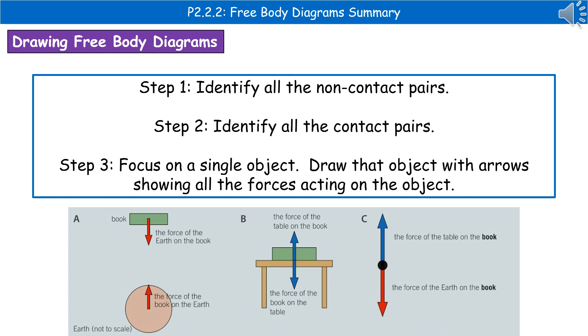We've got that bit first of all. And then we draw the arrows that represent the forces that act on that object. So we're only looking for the forces that are acting on the book in this case.